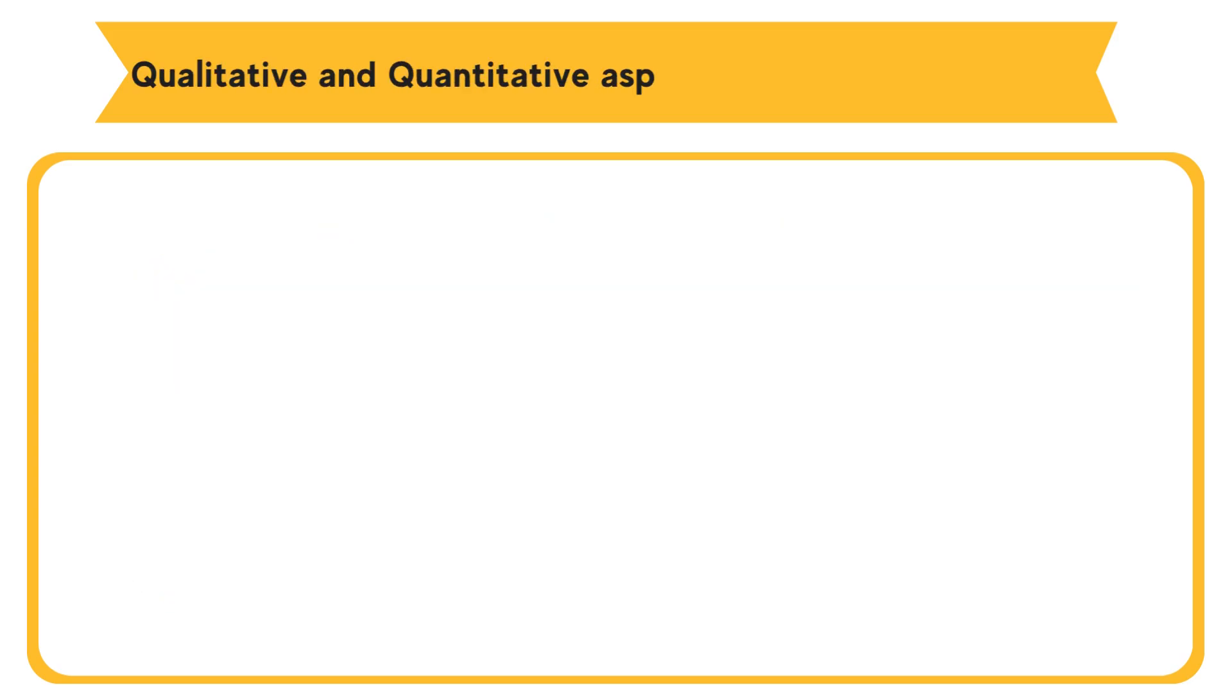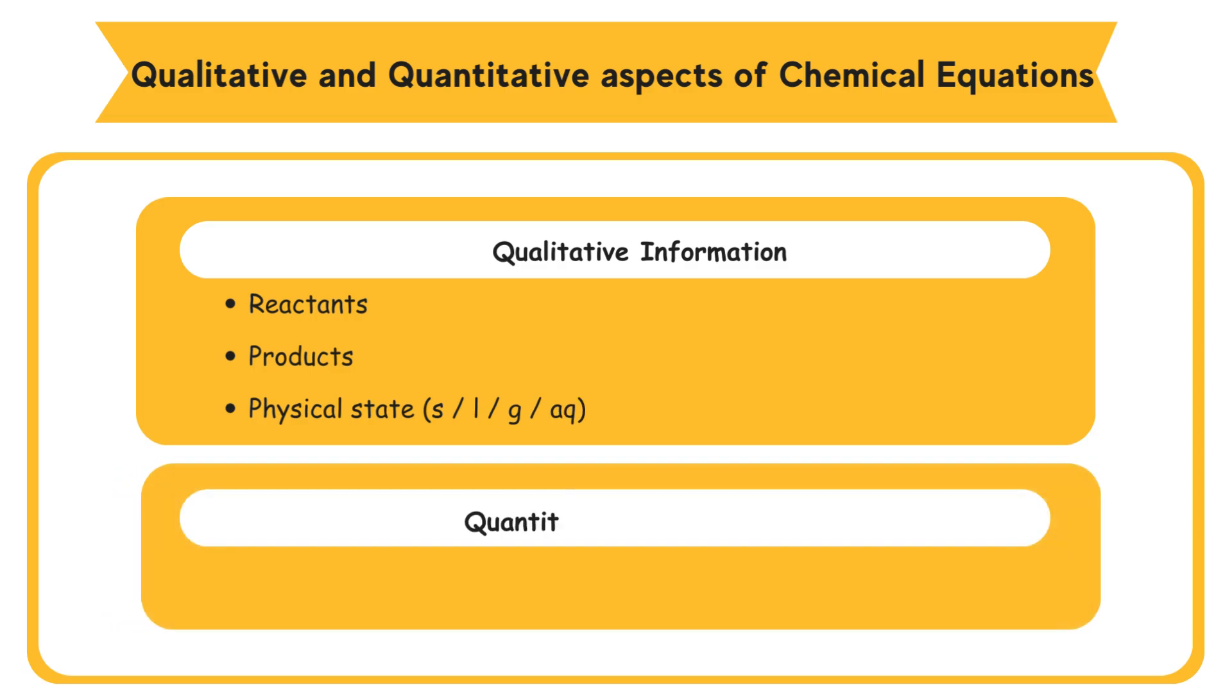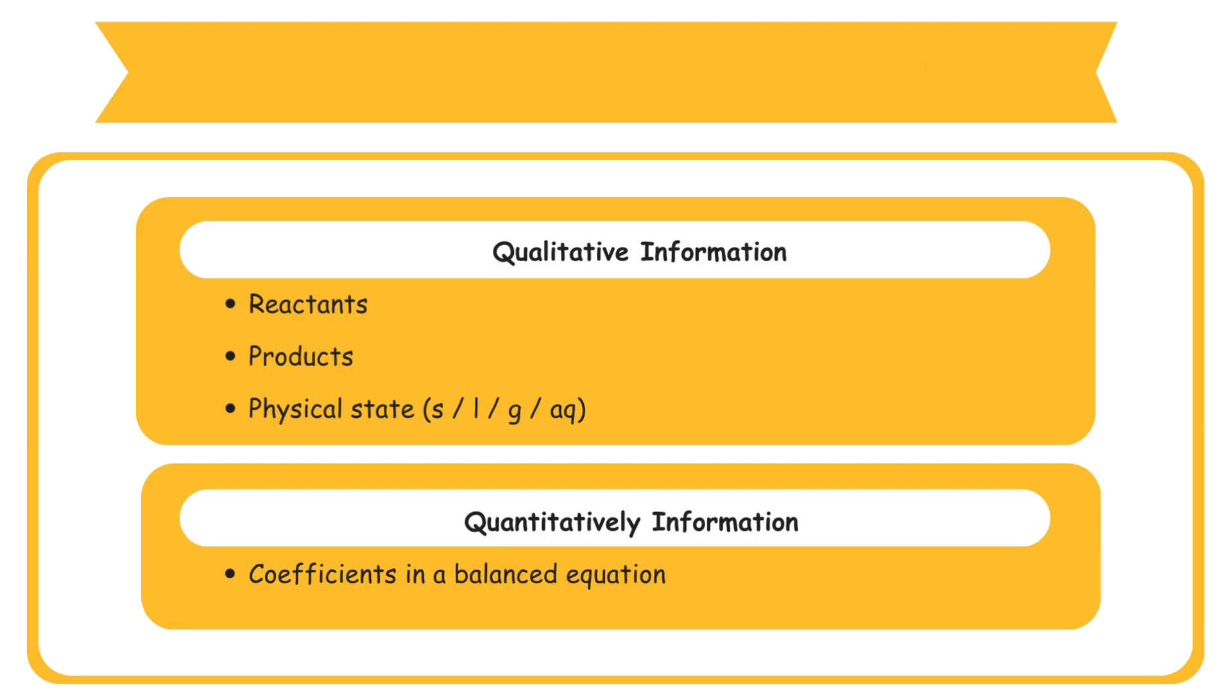Qualitative and quantitative aspects of chemical equations. Qualitative information from chemical equations tells us the reactants and products and the physical state of each reactant and product. Quantitatively, the coefficients in a balanced equation show the ratio of amounts of reactants to products.